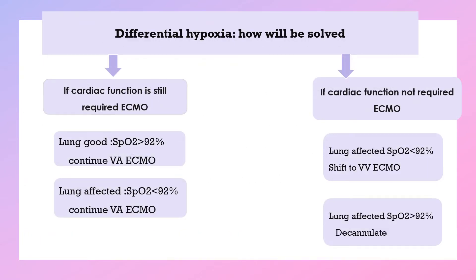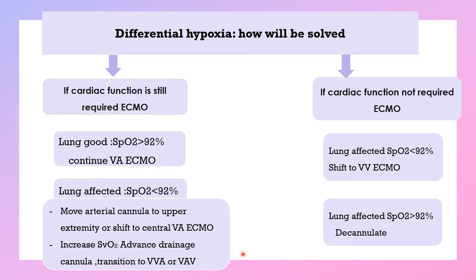How can we solve differential hypoxemia? If cardiac function still requires ECMO but the lung is good and SpO2 is above 90%, continue via VA ECMO. Options include moving the arterial cannula to the upper limb, shifting to central VA ECMO, increasing drainage oxygen saturation by advancing the drainage cannula, or transitioning to VVA or VAV configuration. If ECMO is no longer needed but the lung is unhealthy and SpO2 is 92%, shift to VVA ECMO. If lung function is unaffected and saturation is above 92%, proceed to decannulation.